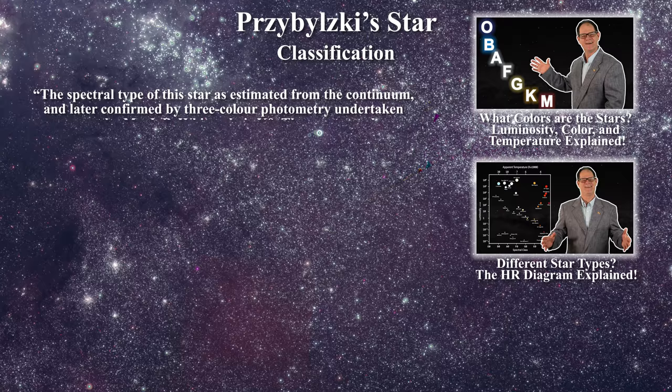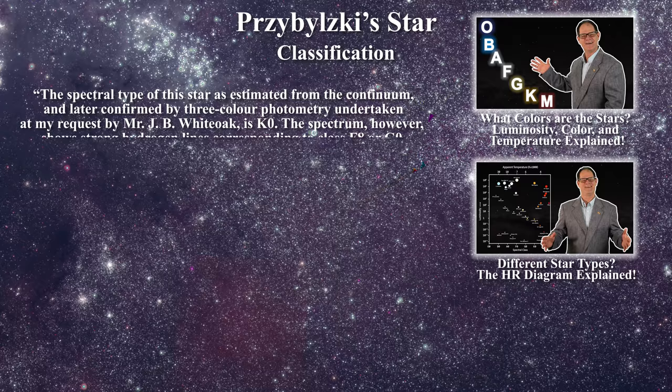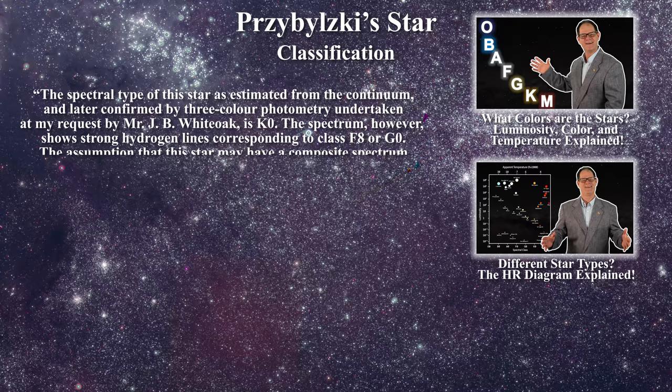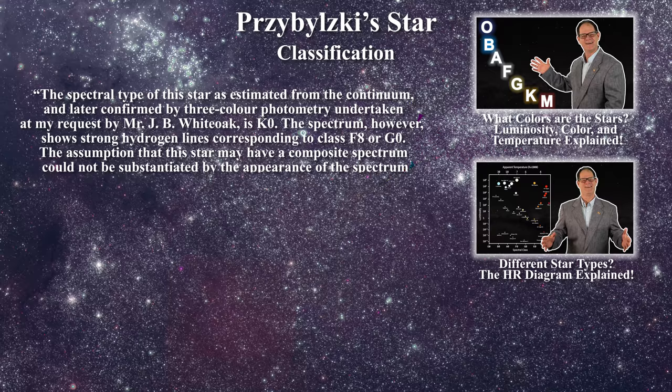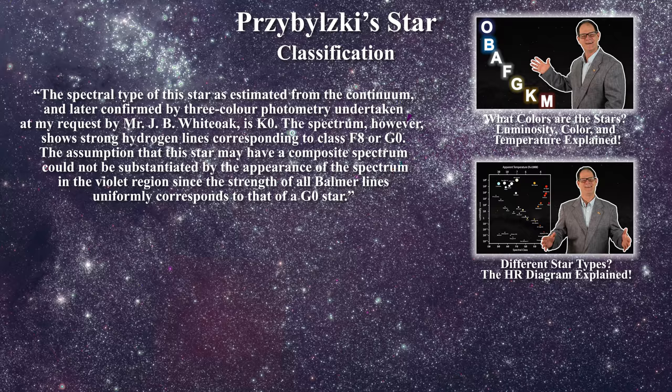Here is what Przybylzki wrote: The spectral type of this star as estimated from the continuum and later confirmed by three-color photometry undertaken at my request by Mr. J.B. White Oak is K0. The spectrum however shows strong hydrogen lines corresponding to class F8 or G0. The assumption that this star may have a composite spectrum could not be substantiated by the appearance of the spectrum in the violet region, since the strength of all Balmer lines uniformly corresponds to that of a G0 star.